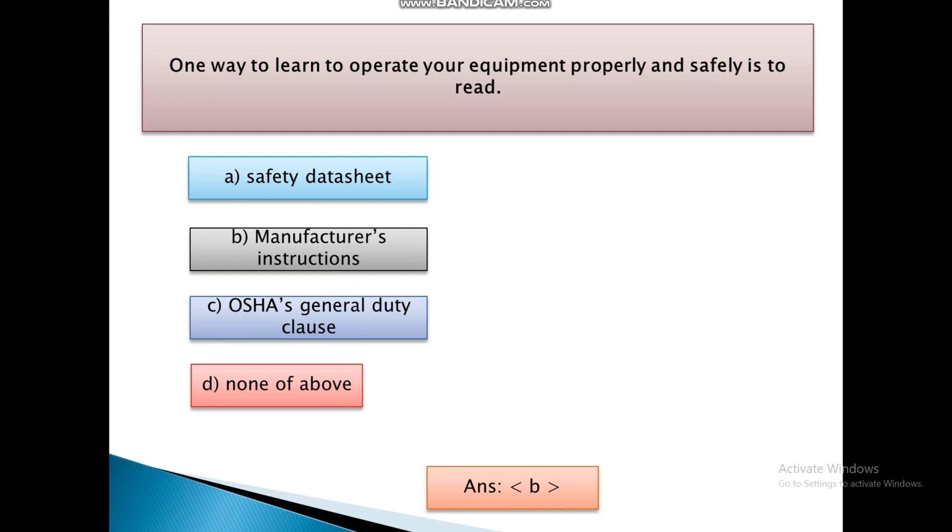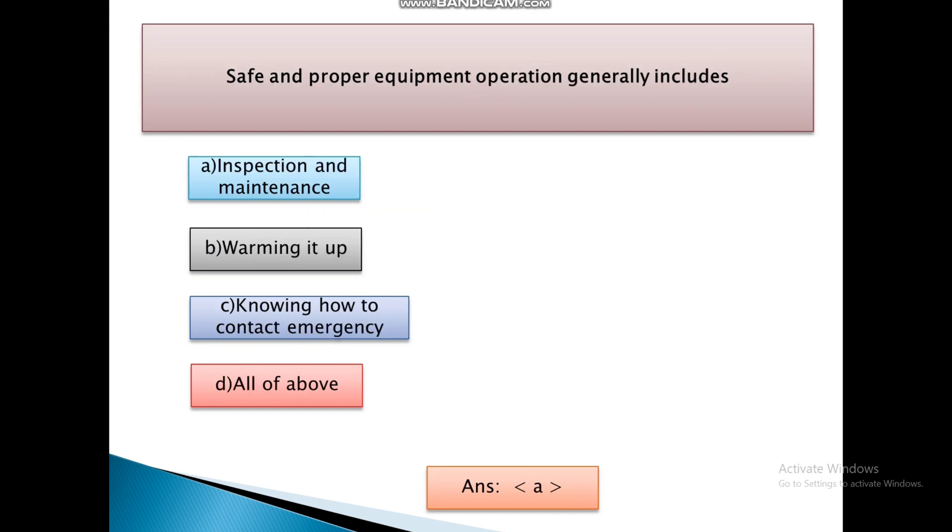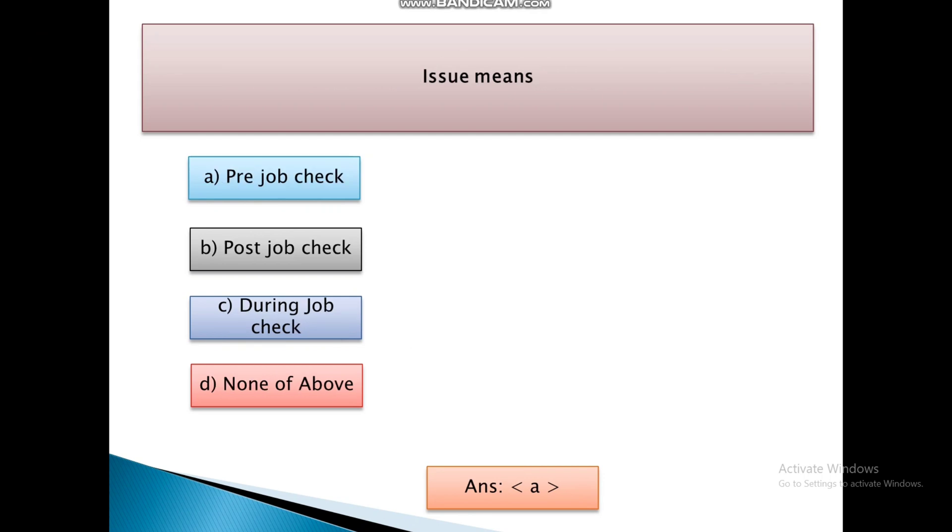One way to learn to operate your equipment properly and safely is to read: First, Safety data sheet. Second, Manufacturer's instruction. Third, OSHA's general duty cost. And Fourth is none. And the answer is B, that is manufacturer's instruction. Safe and proper equipment operation generally includes: inspection and maintenance, warming it up, knowing how to contact emergency, and all of the above. And the answer is A, that is inspection and maintenance.